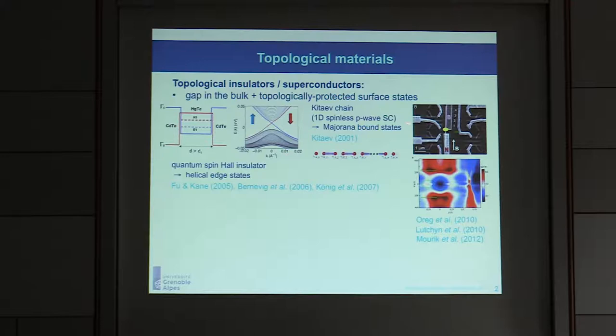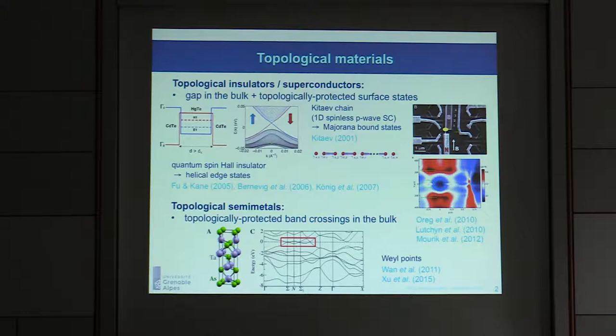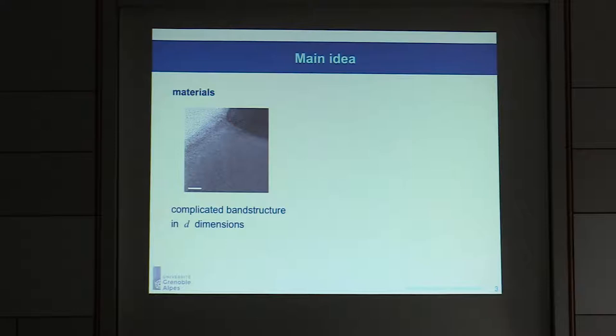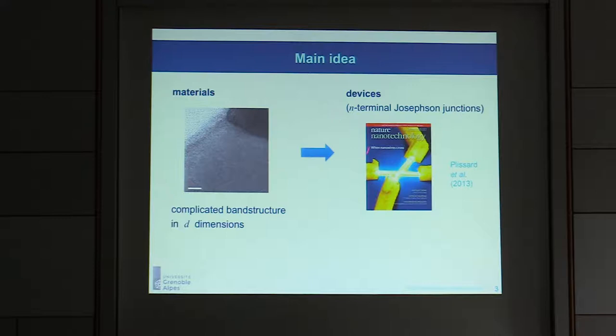Topological phases have been talked about a lot in recent years. The basic idea is that these systems — topological insulators and superconductors, one example being the Kitaev chain — have a gap in the bulk and topologically protected surface states, which in the Kitaev chain case are Majoranas. There are also topological semi-metals or states that don't have a bulk gap but where topologically protected states appear in the bulk.